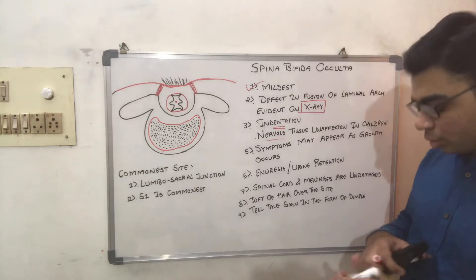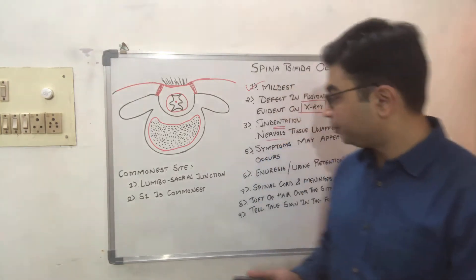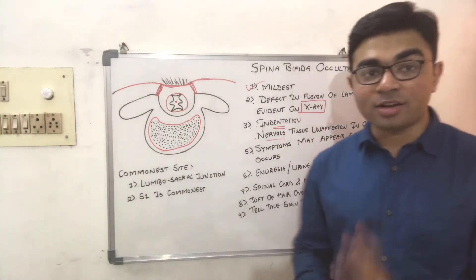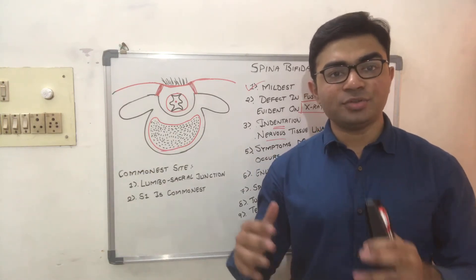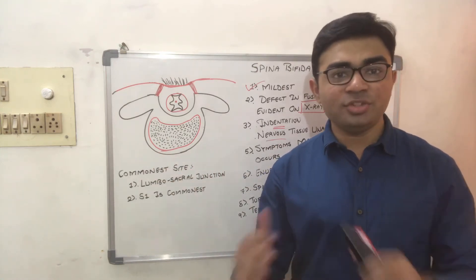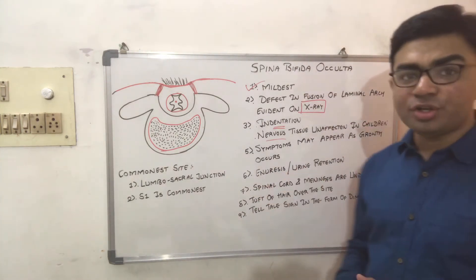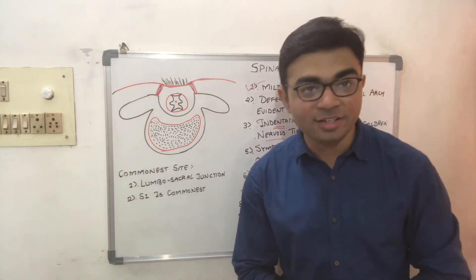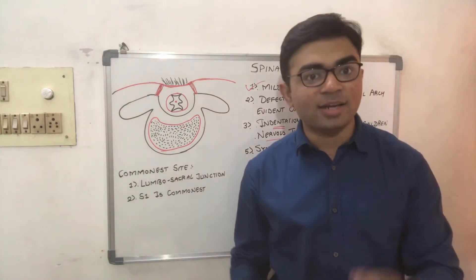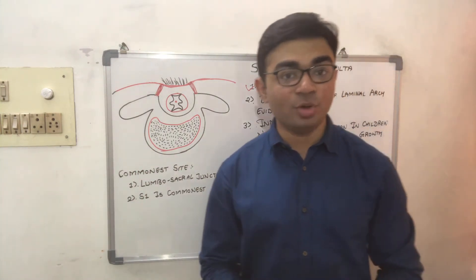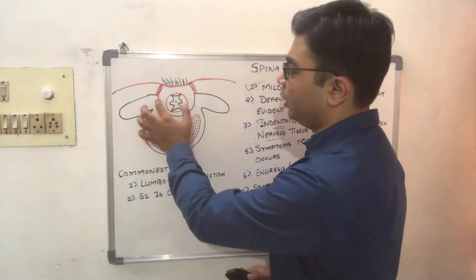Neurological symptoms in spina bifida occulta usually do not appear in childhood, but may start appearing as the child grows, and are most commonly seen in adolescence. Enuresis or urine retention may also be seen. The commonest site is the lumbosacral region, with the first sacral vertebra being the most commonly affected.